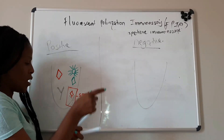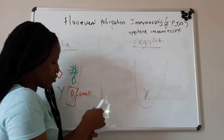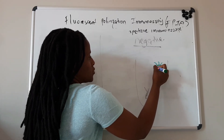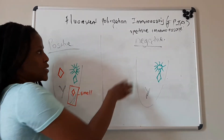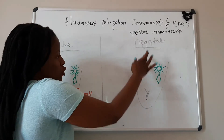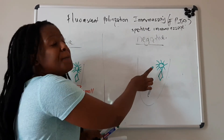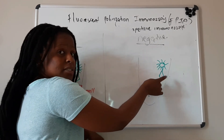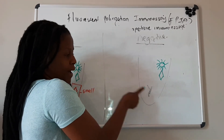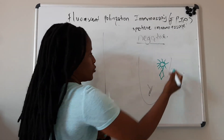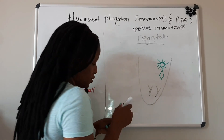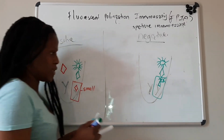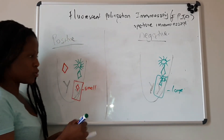In the negative scenario, we have the anti-BANS antibody in the reagent, as well as the BANS antigen tagged with a fluorescent molecule. Since the patient is negative, there is no BANS antigen in the patient serum. So the tagged antigen will bind to the antibody and form an immune complex. As you can see, this is a large molecule compared to the unbound tagged antigen on the positive side.